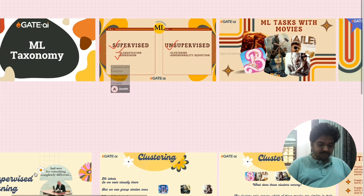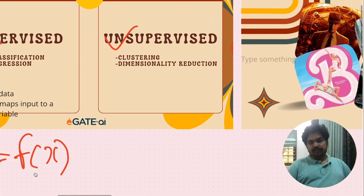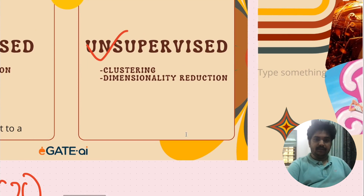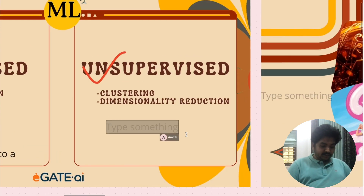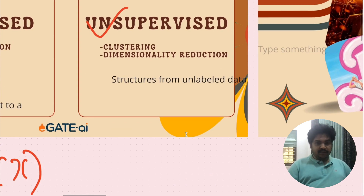The target variable y can be expressed as a function f of x. On the other hand, unsupervised systems do not require labelled data, as they extract similarity patterns or structures from unlabeled data. Unsupervised learning can further be categorized into clustering and dimensionality reduction.